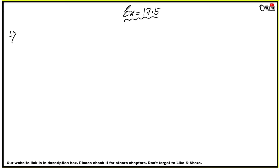Here, electrical wire means a cylindrical shape. This means that you have a sphere which is recast into a cylinder. The volume will be the same. In any recasting problem, your volume will always be the same.